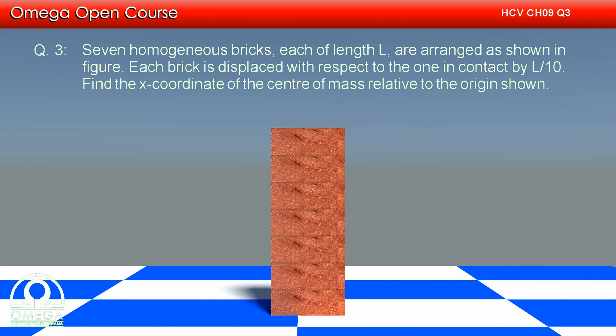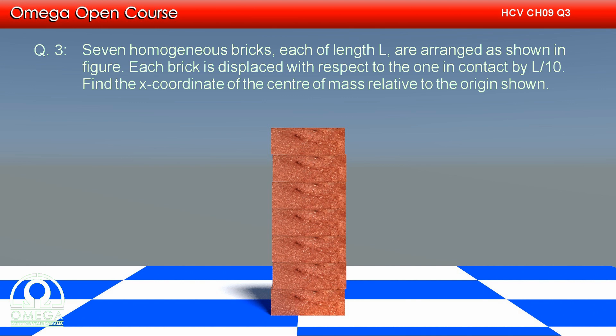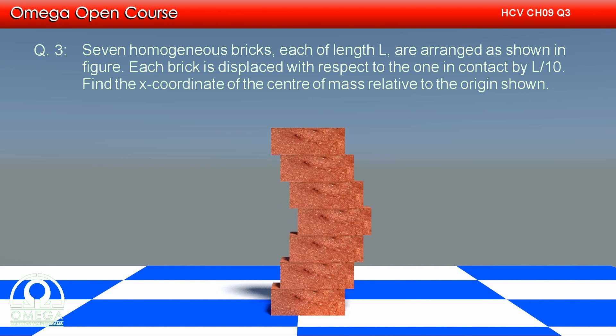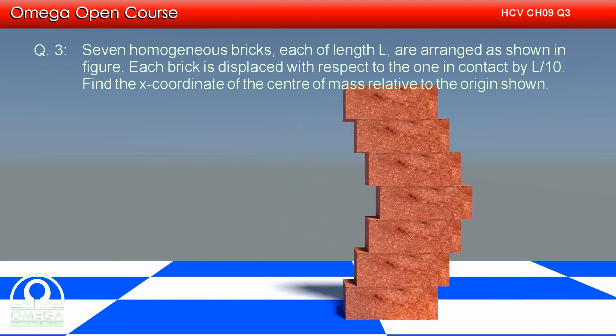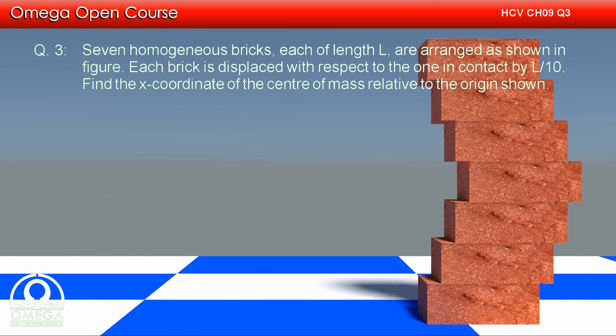Seven homogeneous bricks, each of length L, are arranged as shown in figure. Each brick is displaced with respect to the one in contact by L by 10. Find the x-coordinate of the center of mass relative to the origin shown.